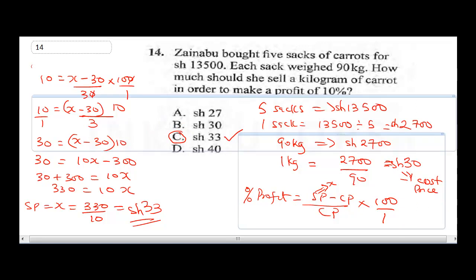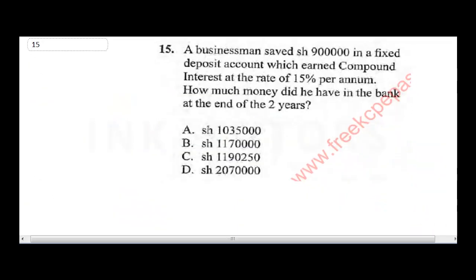Question 15 says, a businessman saves 900,000 shillings in a fixed deposit account which earned compound interest at a rate of 15% per annum. How much money did he have in the bank at the end of the two years? Now, the first thing you need to realize is it's a question on compound interest and not simple interest. So you need to know that you have to compound the interest. After solving for the simple interest, you need to add the interest to the capital and use the new capital to solve for the second year. So now to solve this question, we need to get an interest for the first year.